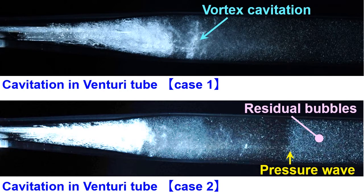Case 1 shows a typical vortex cavitation in a venturi tube. Case 2 reveals a pressure wave visualized by the shrink of residual bubbles.